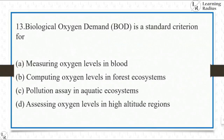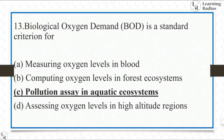Biological Oxygen Demand is a standard criterion for measuring: oxygen level in blood, computing oxygen level in forest ecosystems, pollution assay in aquatic ecosystems, or assessing oxygen levels in high altitude regions. It's a very easy and direct question. Biological Oxygen Demand is a standard criterion for pollution assay in aquatic ecosystems.